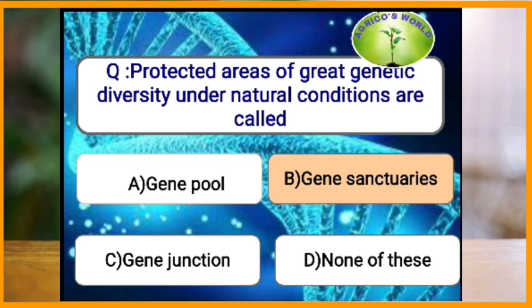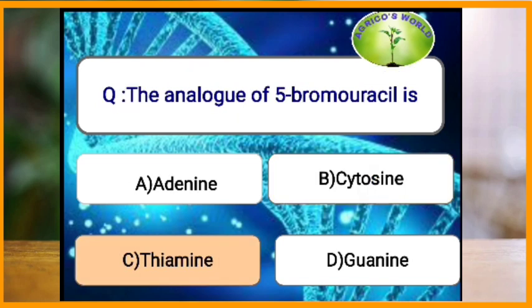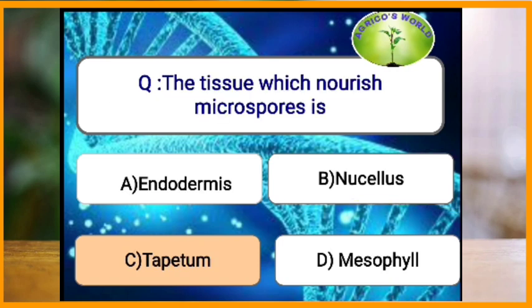What is the analog of 5-bromouracil? Thymine is the analog of 5-bromouracil because bromine is present at the C5 position instead of a methyl group. The analog of 2-aminopurine is adenine. The tissue which nourishes the microspores is called tapetum.